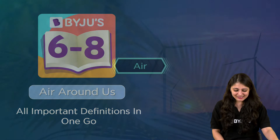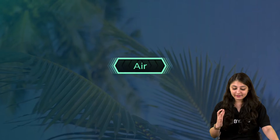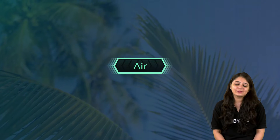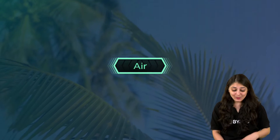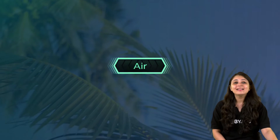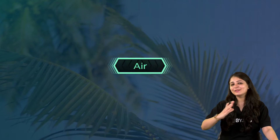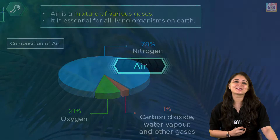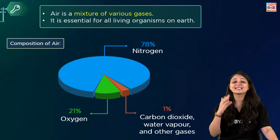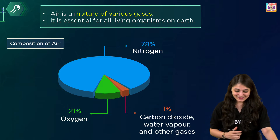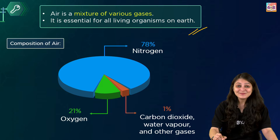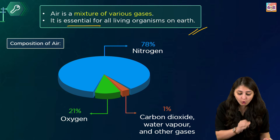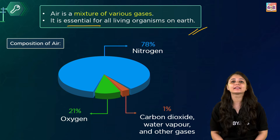The first term we have is air. Now what is air? It's a very common thing, but let's see what it actually means. Air is the invisible mixture of gases that surrounds the earth. It is essential — meaning important — and it is required for all living organisms.